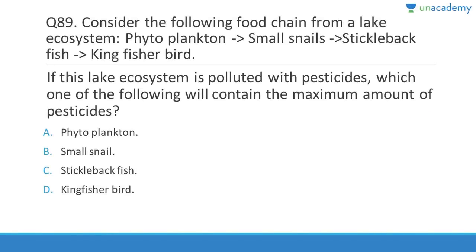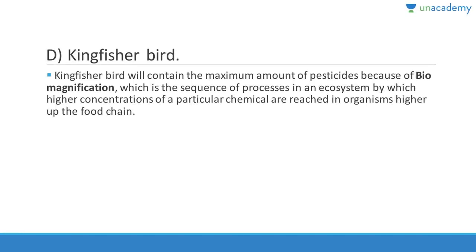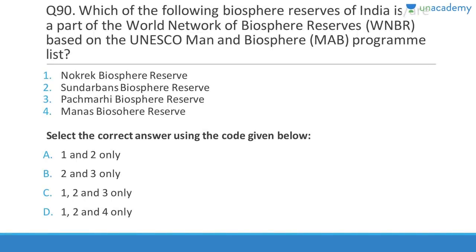Question 89: Consider the food chain — phytoplankton → small snails → stickleback fish → kingfisher bird. If the lake ecosystem contains volatile pesticides, which will contain the maximum amount? The answer is the kingfisher bird, because of biomagnification. The eggshells will become brittle due to disrupted calcium formation, leading to the death of chicks before they hatch. The concentration of DDT increases higher up the food chain.